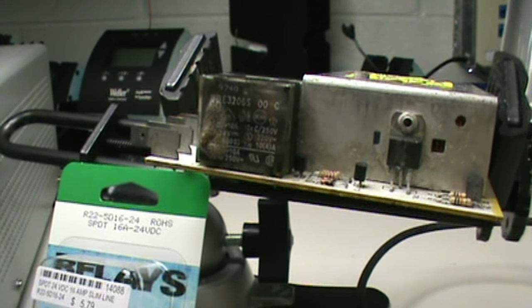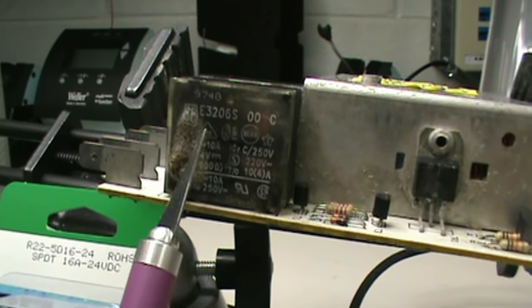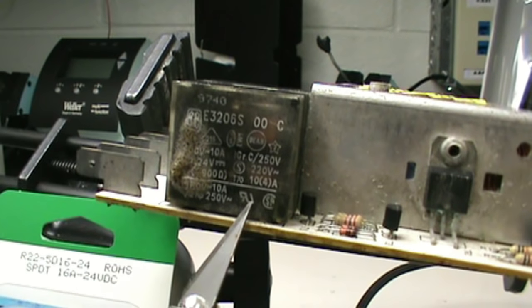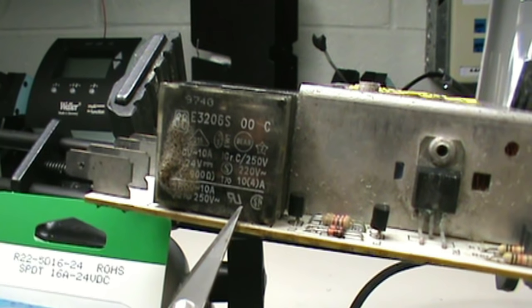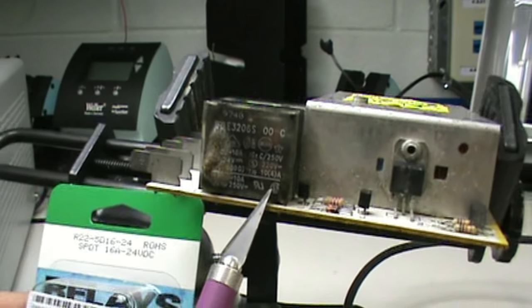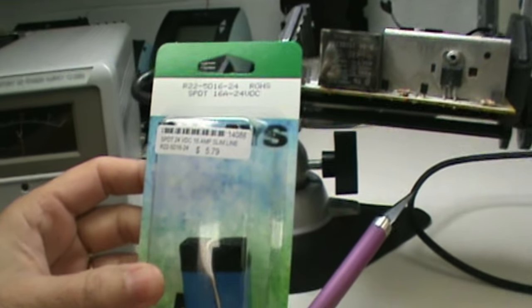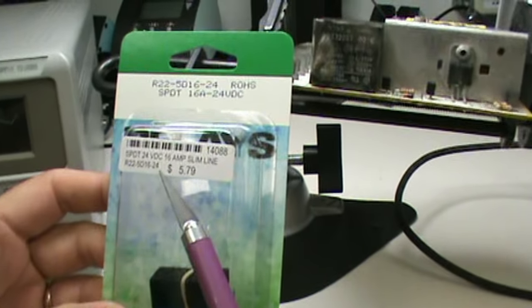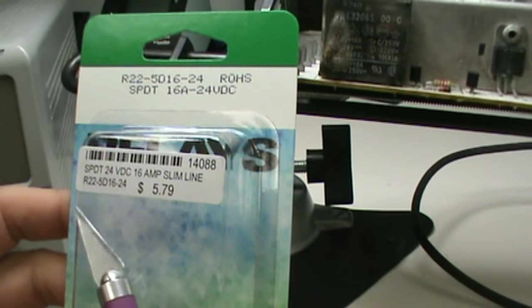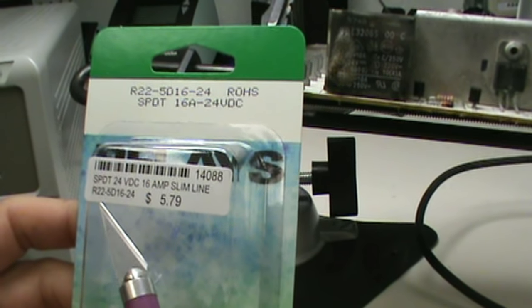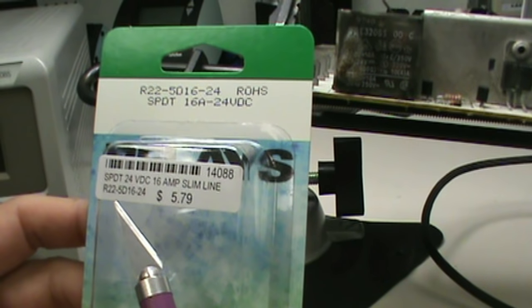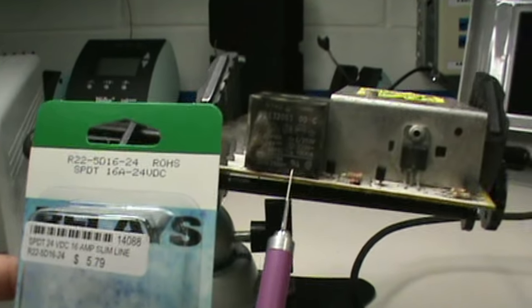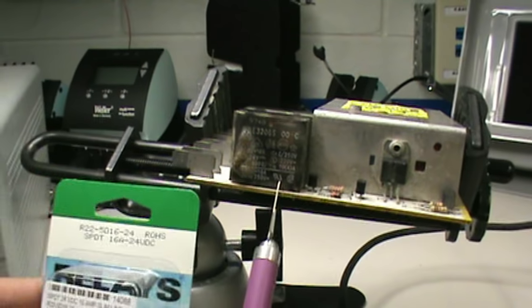One thing I wanted to cover is this relay, this E3206S relay is not available anymore. You're not going to be able to find it. So D-Lab did a little bit of research and I found this lovely NTE relay and here's the part number. You can see it has the same specs. There's your part number, the R225D16-24. This relay is a drop in replacement for the stock E-series relay.